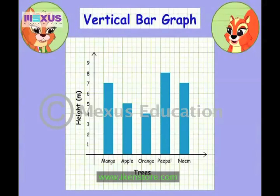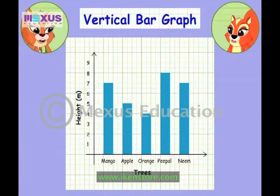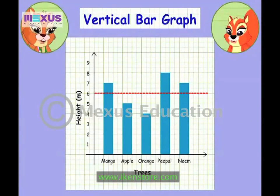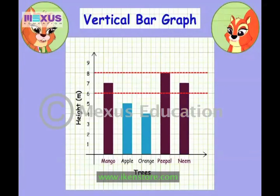This is a vertical bar graph. While drawing a vertical bar graph, you can specify what each horizontal line shows — like here it means 1 meter. You can assume it shows 2, or 5, or even 100, depending on the kind of numbers you want to show on the graph. You wanted to know which trees are taller than 6 meters but shorter than 8 meters, right? Now, what are the bars that are within the two red lines? Mango, peeple, and neem trees. So there you go — these trees are perfect for you to climb.